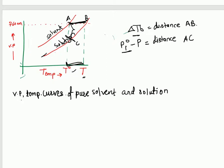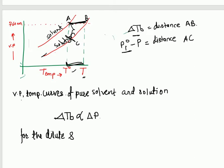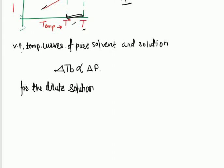The elevation of boiling point is proportional to the lowering of vapour pressure. Elevation of boiling point, that is delta Tb, is proportional to the lowering of vapour pressure. As the vapour pressure of the solution decreases, the boiling point increases. Thermodynamically it is proved that for dilute solutions, the elevation in boiling point, delta Tb, is proportional to the molality.